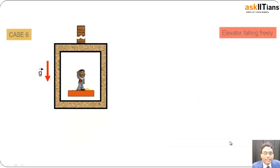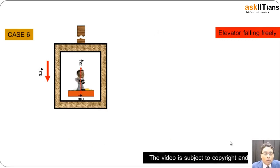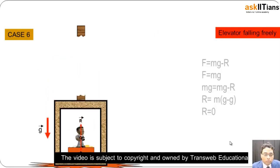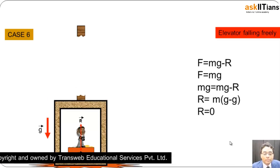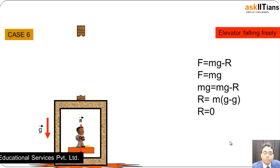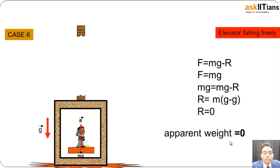Final case: when the elevator is falling freely. When the elevator is falling freely, obviously the normal reaction in this case is going to be zero because the apparent weight is going to cancel the actual weight. So the value of normal reaction is zero, and the apparent weight will be zero. Hopefully all of you understood whatever we discussed here in all these